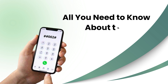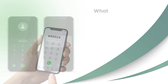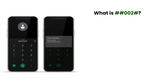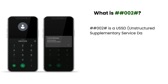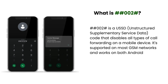All you need to know about the ##002# code. ##002# is an Unstructured Supplementary Service Data (USSD) code that disables all types of call forwarding on a mobile device. It's supported on most GSM networks and works on both Android and iOS phones.